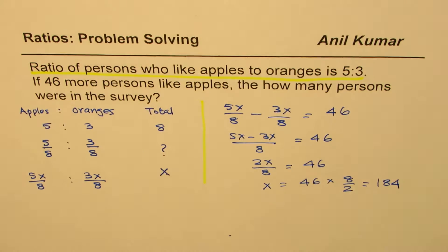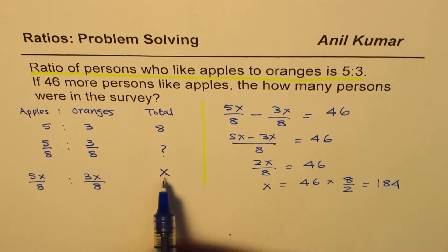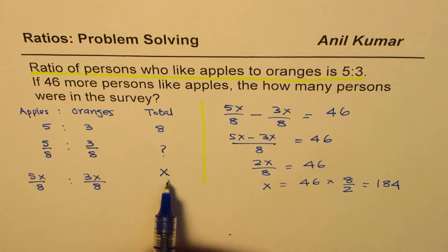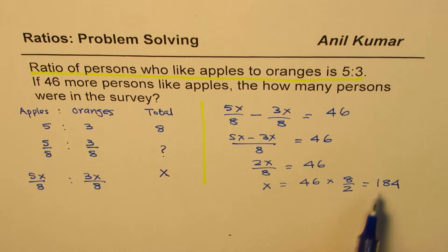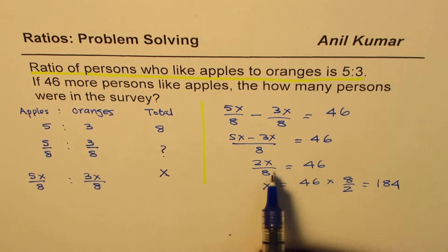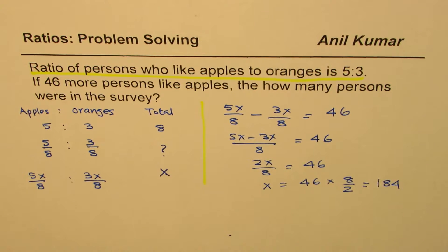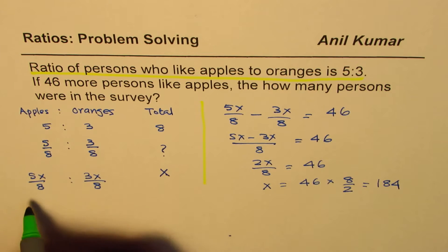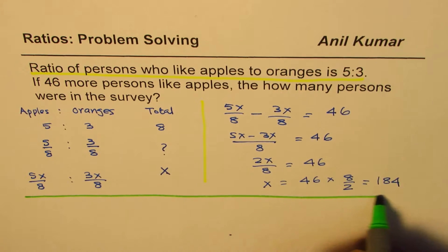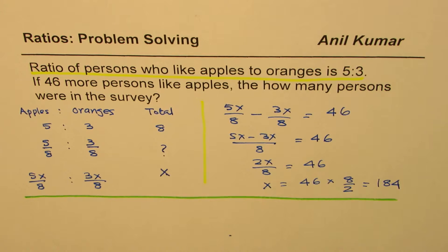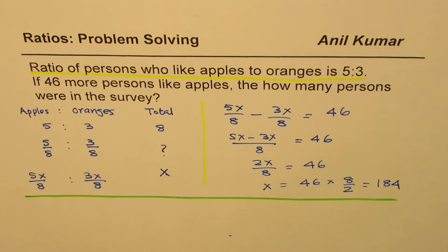So 184 is the total number of persons who should be surveyed so that 46 more like apples if the ratio is 5 is to 3. That is one way of solving this question and I hope it helps to understand the concept. I'm very thankful to my subscribers to bring this question up.